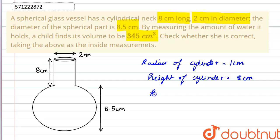And the radius of sphere will be 8.5 by 2, that is 4.25 cm.